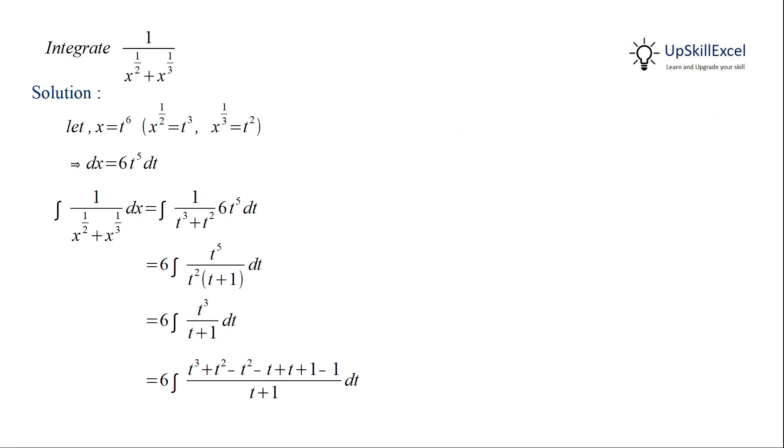We'll add and subtract t squared, t, and 1. Now this can be easily factorized in terms of t plus 1, and then canceling the t plus 1 in first, second, and third terms gives us t squared minus t plus 1. The last term will remain as 1 over t plus 1.